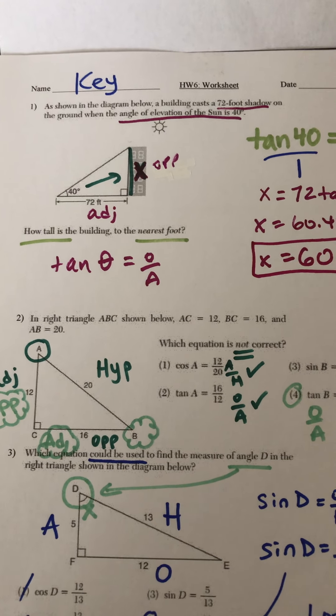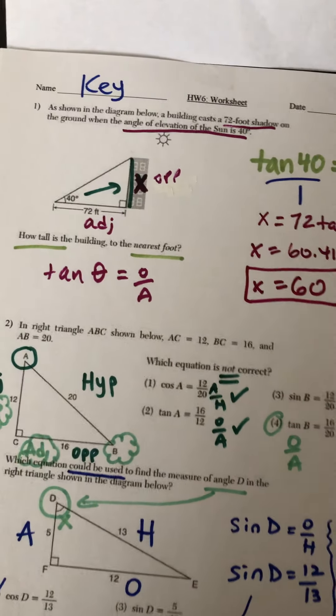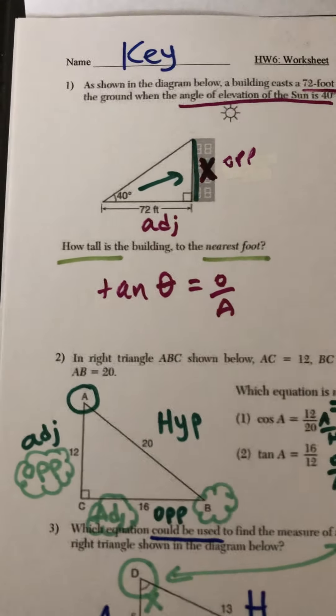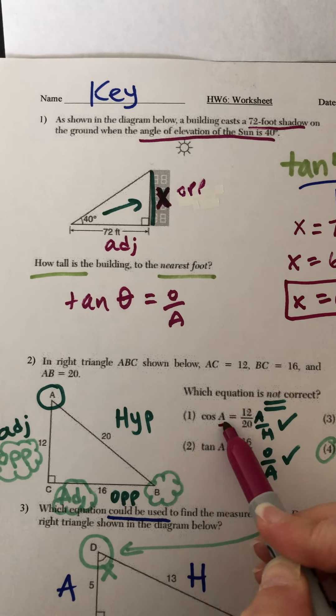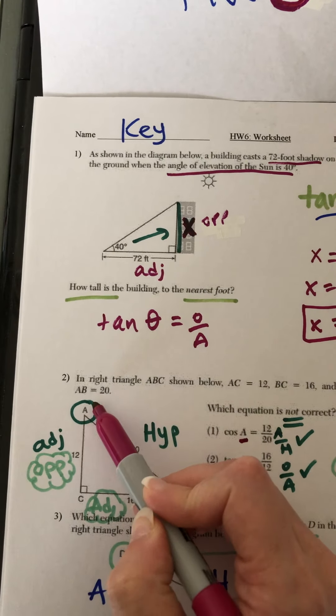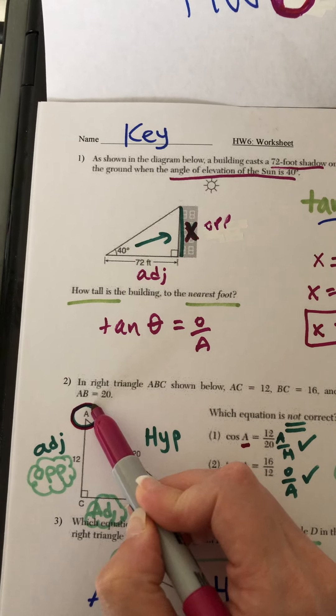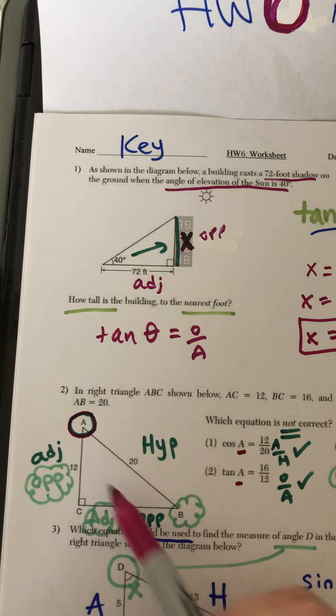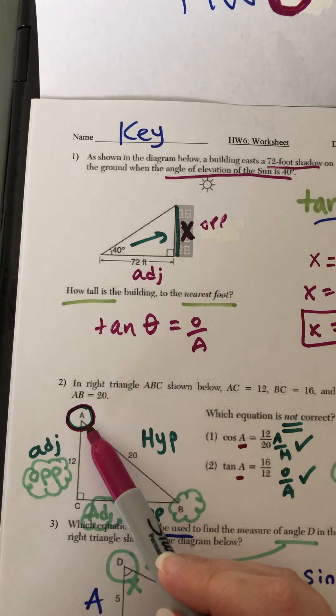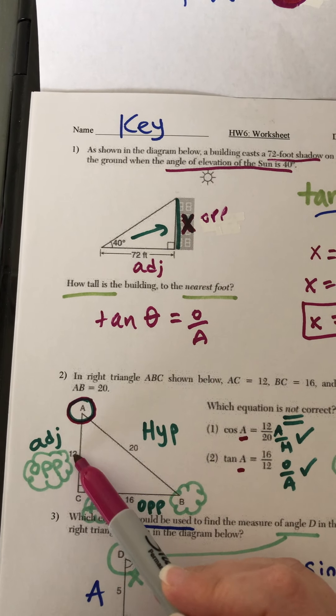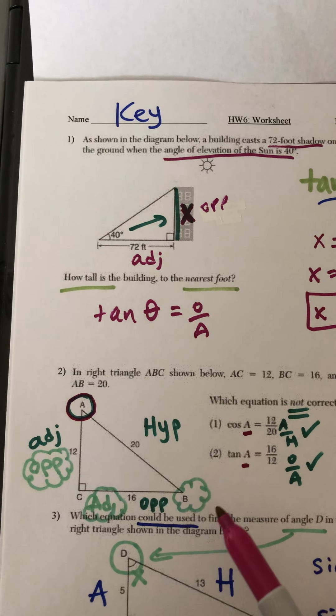In number two, we're asked which equation is not correct. So I've done a lot of labeling already on my diagram. What I did was I started with cosine a and tan a, which is all over here. So anything I've written in this dark green is coming from angle A. Opposite is 16. Adjacent is 12. The hypotenuse will always be 20 for this question.